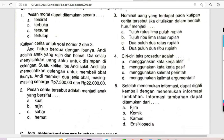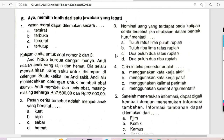Berikut, ciri-ciri teks prosedur adalah: A. Menggunakan kata kerja aktif, B. Menggunakan kata kerja pasif, C. Menggunakan kalimat perintah, D. Menggunakan kalimat argumentatif. Ciri-ciri dari teks prosedur itu menggunakan kalimat perintah (C) dan menggunakan kata kerja aktif (A). Jawabannya yang sesuai ciri-ciri teks prosedur adalah A dan C.